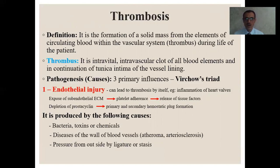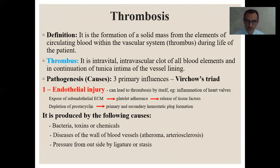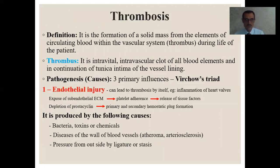During endothelial injury, the result is exposure of subendothelial extracellular matrix that provides platelet adherence and release of tissue factors. This initiates the coagulation process, resulting in primary and secondary hemostatic block formation. It is produced by bacteria, toxins, chemicals, or diseases of the wall of blood vessels such as atheroma, arteriosclerosis, and pressure from outside by ligature or stasis. The second postulate of Virchow's triad is slowing of blood flow, turbulence, or stasis. Normally, blood flow is laminar in blood vessels, so cellular elements flow in the middle layer surrounded by plasma.